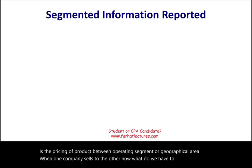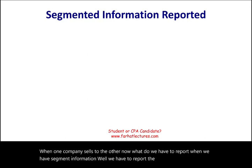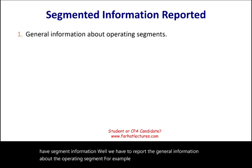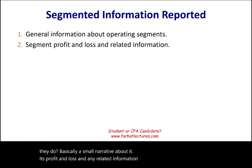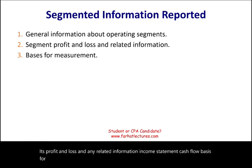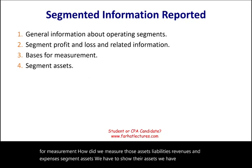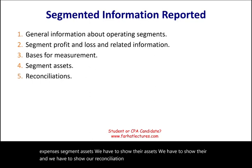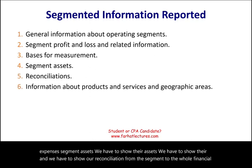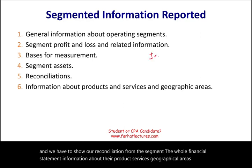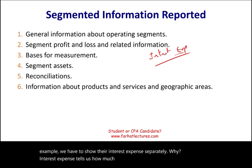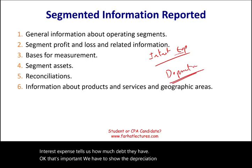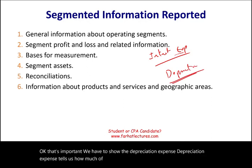What do we have to report when we have segment information? We must report general information about the operating segment — where it operates, what it does, a brief narrative. We report its profit and loss and related income statement information, cash flow, basis of measurement for assets, liabilities, revenues, and expenses. We show segment assets and a reconciliation from the segment to the consolidated financial statements. Information about products, services, and geographical areas must be included, along with interest expense and depreciation expense separately.